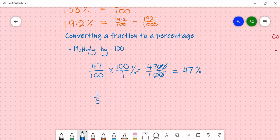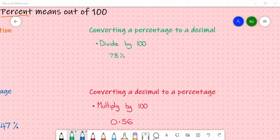Let's just multiply it by 100. So we get 100 over 5, which equals 20%. So 1 fifth is 20%. Now we're going to look at converting a percentage to a decimal.